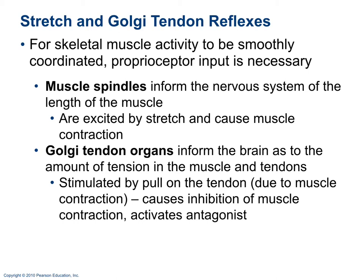Muscle spindles inform the nervous system of muscle length; they are stimulated by muscle stretch and respond by causing that muscle to contract. Golgi tendon organs are stimulated by stretch of the tendon, which occurs when a muscle contracts and pulls on the tendon. When the tendon is stretched to a certain point, the Golgi tendon organ responds by inhibiting muscle contraction while activating the antagonist muscle — reciprocal activation.